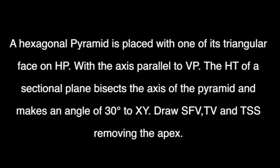A hexagonal pyramid is placed with one of its triangular faces on HP with the axis parallel to VP. The HT of a sectional plane bisects the axis of the pyramid and makes an angle of 30 degrees to XY. Draw sectional front view, top view and TSS removing the apex.